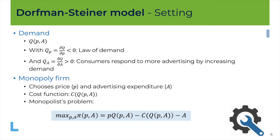Here is the model, which is quite simple. We define the demand for some product as a function of two variables: the price as usual, but also the level of advertising, which we note A. As the price decreases, the quantity demanded increases — we have a negative first-order derivative of quantity demanded with respect to price. This is the usual law of demand. What we add here is that the derivative of quantity demanded with respect to advertising is positive, translating the idea that consumers respond to more advertising by increasing the quantity they demand. You can see advertising as a way to expand the demand for the monopolist.